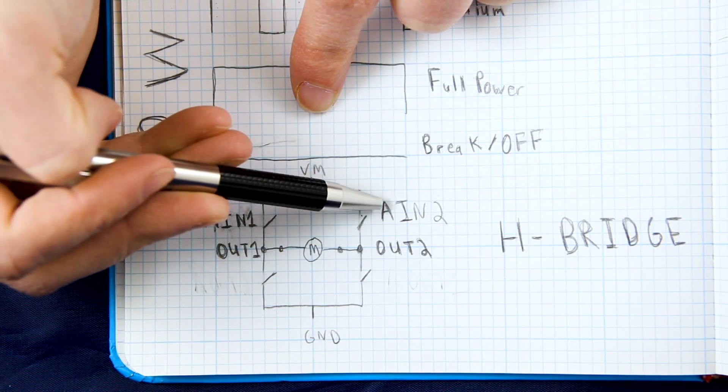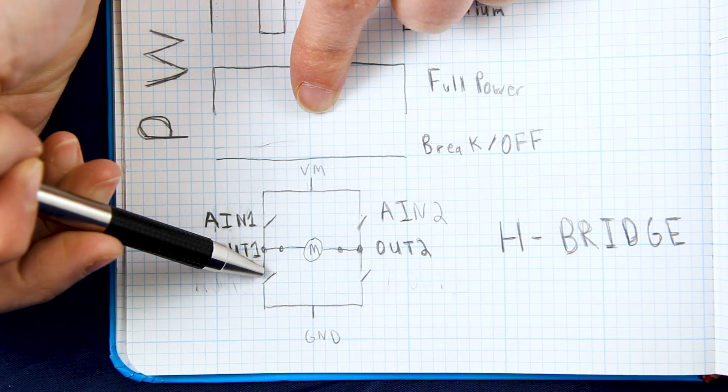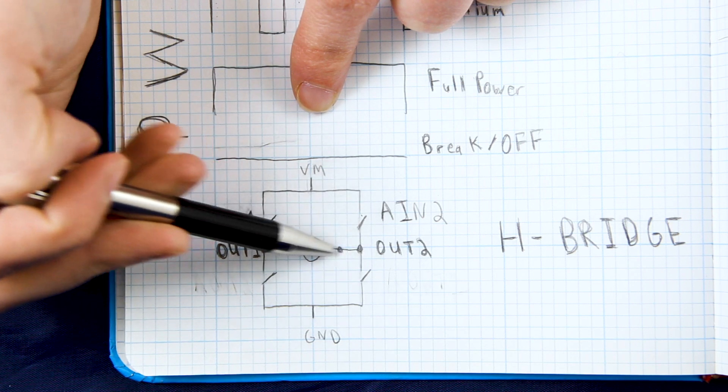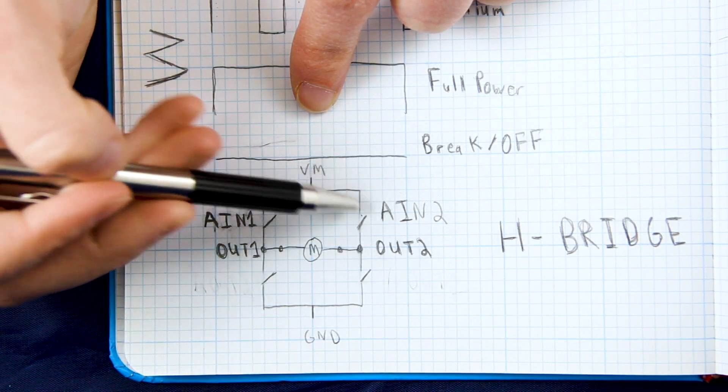This one and this one are still open and then if we want the direction of the current to go the opposite way we close A in 2. So we're setting this to high, we're closing this switch and this switch will also close.